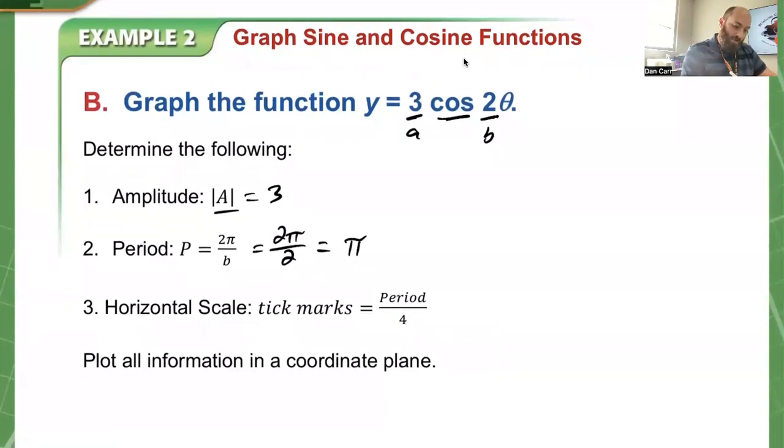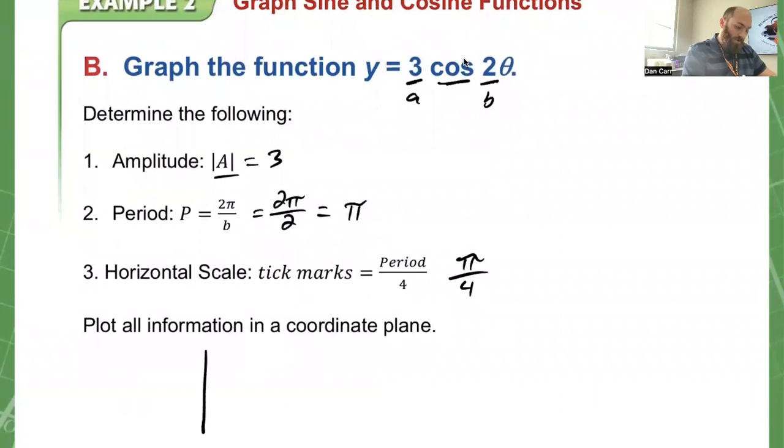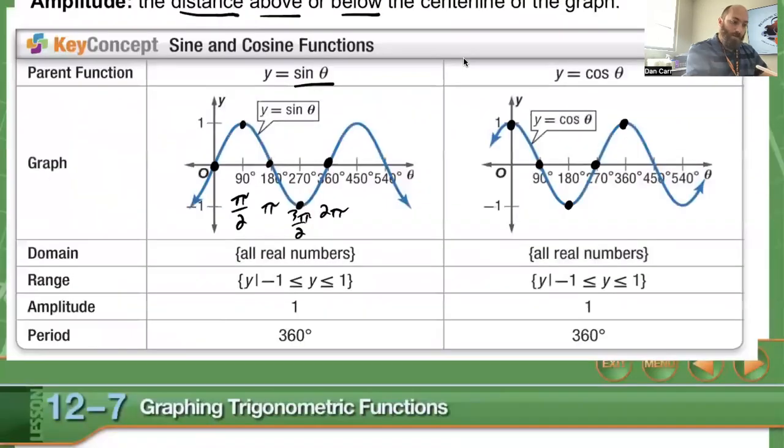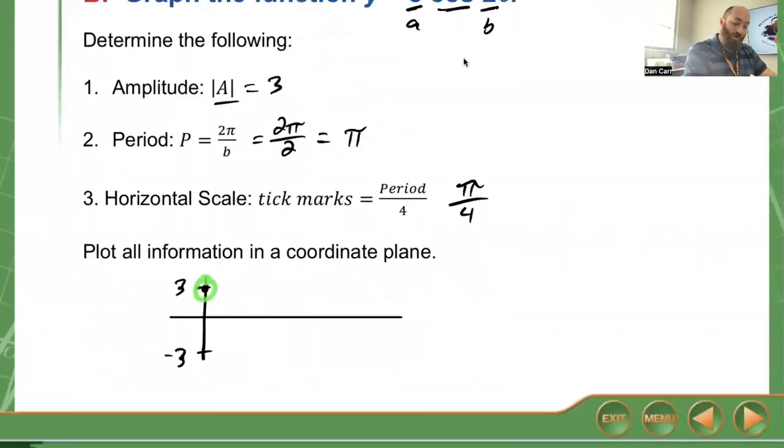My horizontal scale: I take my period length, which is pi, divided by 4. So pi over 4 is going to be each tick mark in the period. My amplitude is going to go up to 3 and down to negative 3. Since my normal cosine starts at (0,1), with the amplitude of 3, it's going to start at (0,3). I'm still going to mark four tick marks.